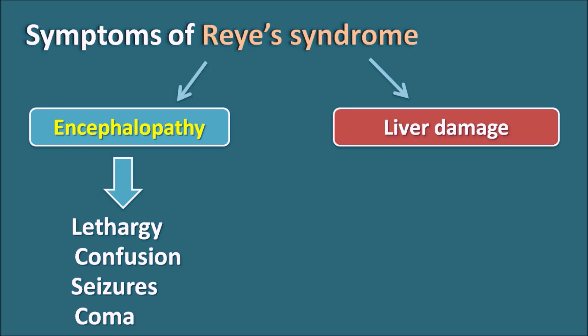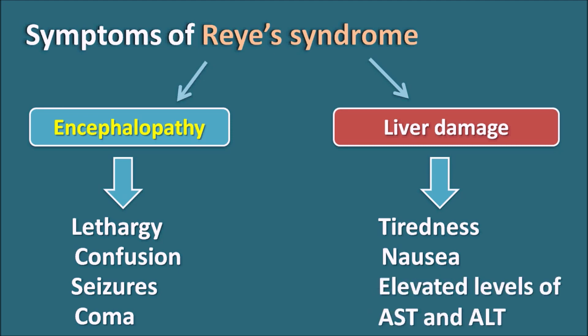Liver damage can also progress with Reye's Syndrome, causing tiredness, nausea, and vomiting in the patient. This liver damage is observed with fatty deposits on the liver, which further impairs liver functionality, resulting in elevated levels of AST and ALT enzymes in the blood during Reye's Syndrome.